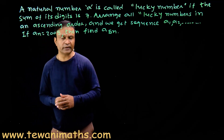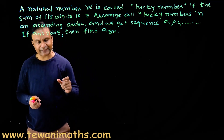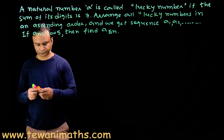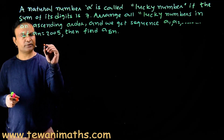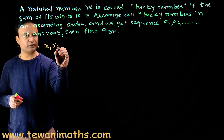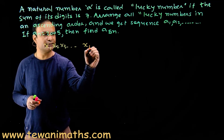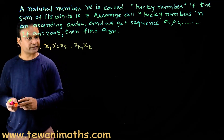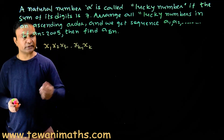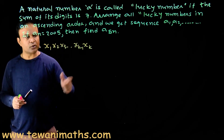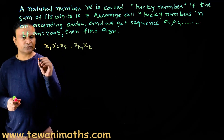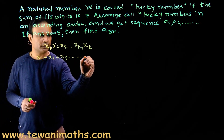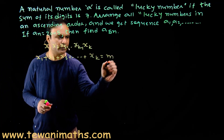First, let us see how many numbers of k digits can be formed in which the sum of digits is m. Suppose a k-digit number is x₁, x₂, x₃, ..., xₖ, where xₖ is the units place digit and xₖ₋₁ is the tens place digit. The sum of digits equals m, so we have the equation x₁ + x₂ + x₃ + ... + xₖ = m.